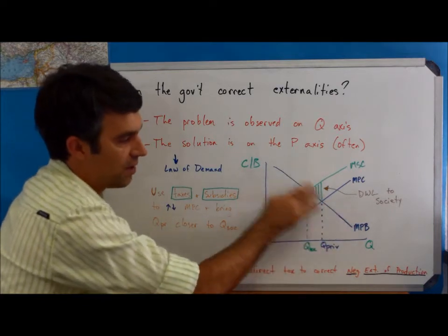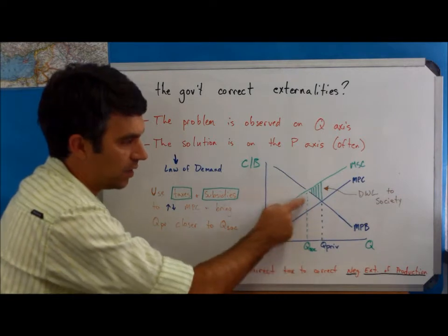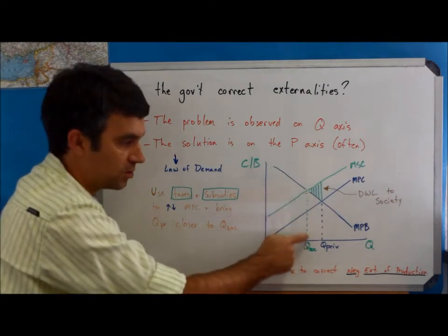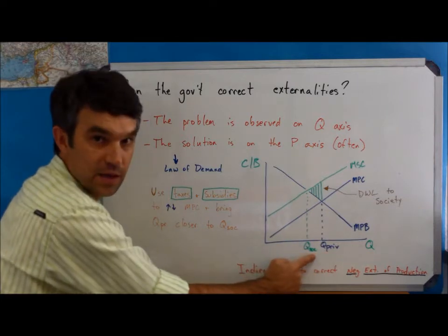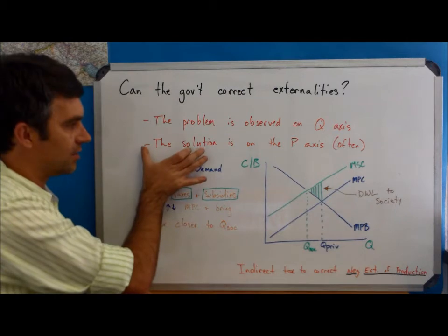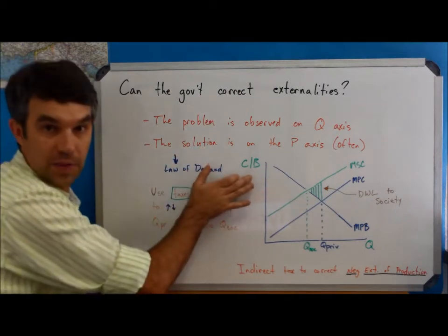Do the private parties, are they willing to buy only QSocial? They are. But for them to only buy QSocial, for them to buy less, the price has to be higher. So that's what I mean in saying that the solution is often on the P-axis.